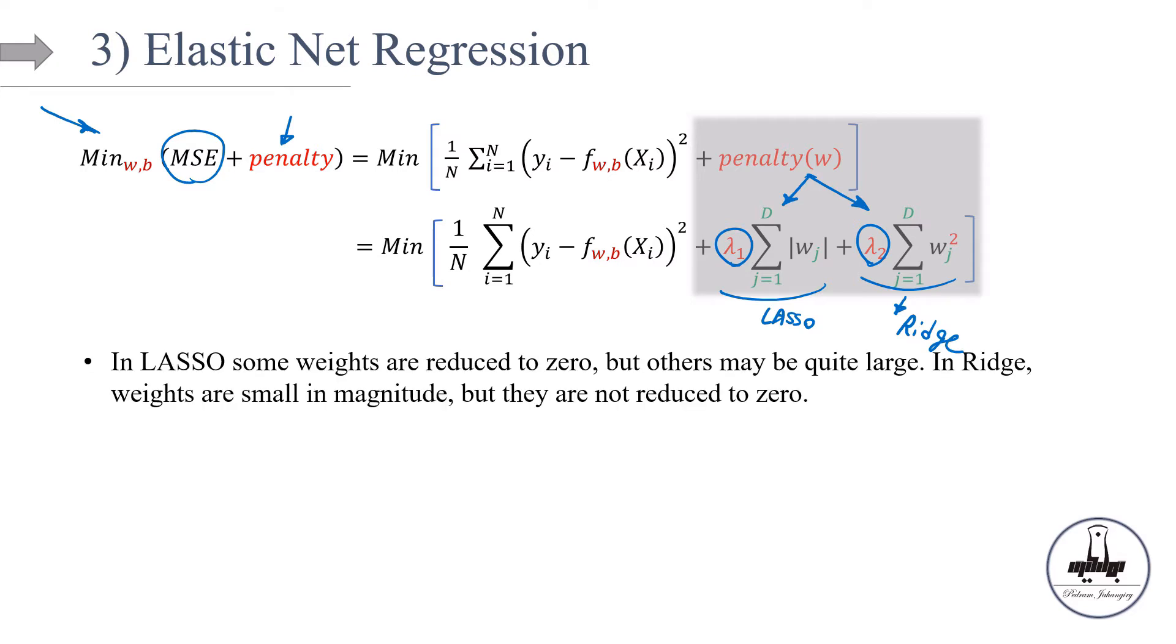In lasso, some weights are reduced to zero, but others may be quite large. In ridge, weights are small in magnitude, but they're not reduced to zero. So this is the summary of lasso and ridge. In lasso, we set some of them exactly equal to zero. And for the other ones that are remaining in the model, they may be large.